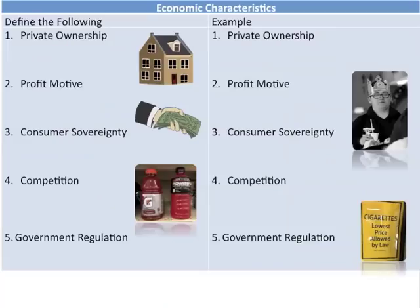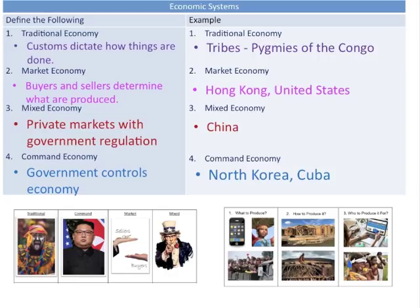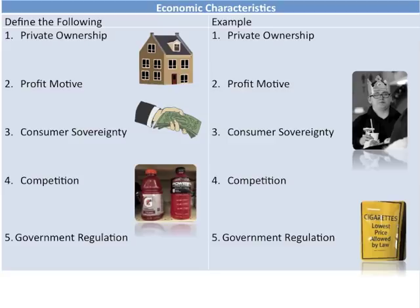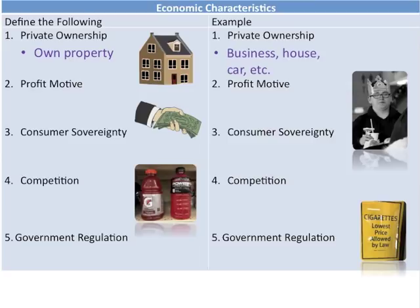Within economic systems, there are certain economic characteristics. Private ownership means in a market economy you can own physical property — a car, house, business — or intellectual property through patents or copyrights. Profit motive is the driving force behind market economies: the ability to make money by working or selling products for profit.